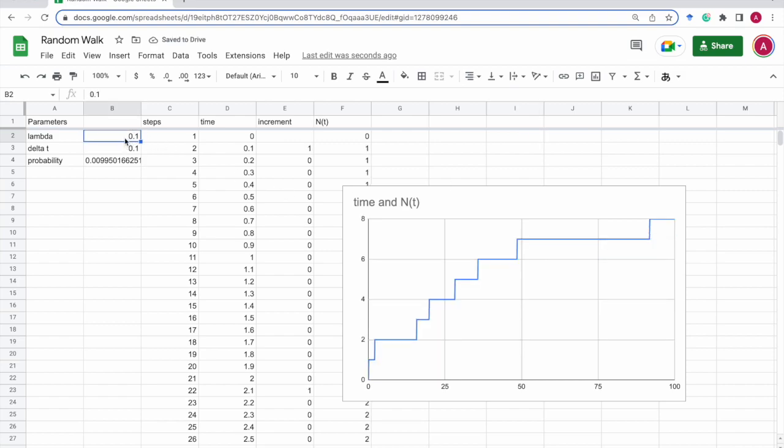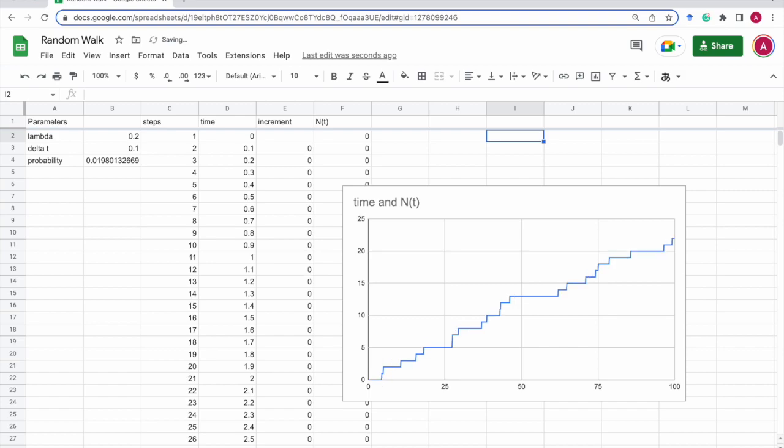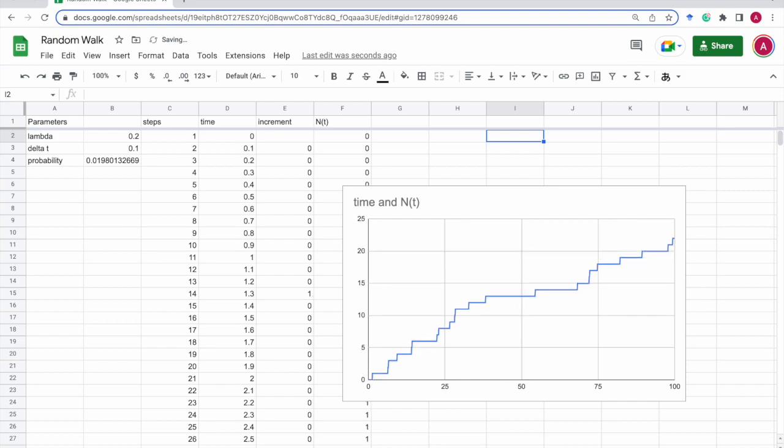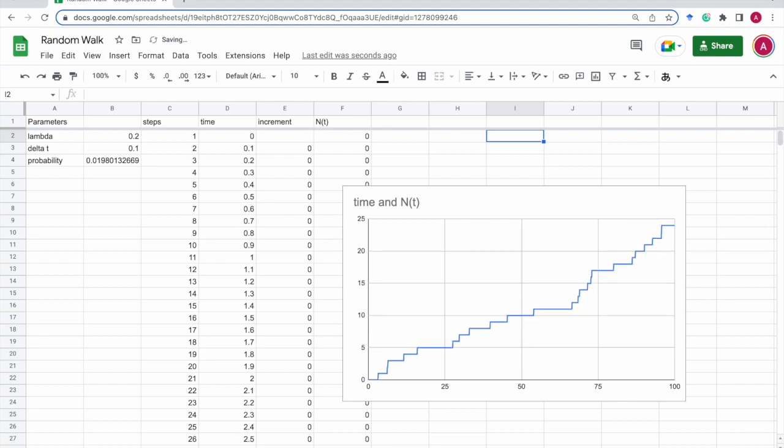And if we change the value of lambda, let's say 0.2, then we see something like this. So it looks less smooth compared to 0.1 because the probability of increment is a lot larger. Approximately twice as large, actually.